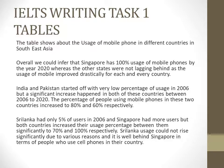The table shows about the usage of mobile phones in different countries in Southeast Asia. Overall, we could infer that Singapore has 100% usage of mobile phones by the year 2020, whereas the other states were not lagging behind as the usage of mobile phones improved drastically for each and every country.